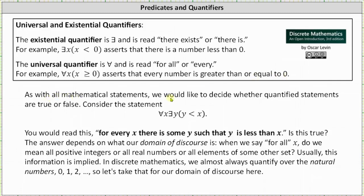As with all mathematical statements, we would like to decide whether quantified statements are true or false. Consider the statement: for every x, there is some y such that y is less than x. Is this true? The answer depends on what our domain of discourse is. When we say for all x, do we mean all positive integers, or all real numbers, or all elements of some other set?